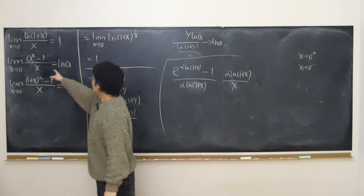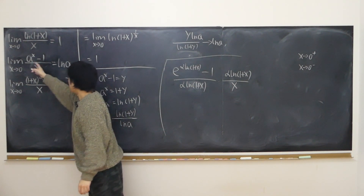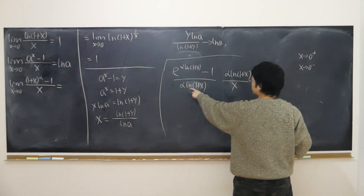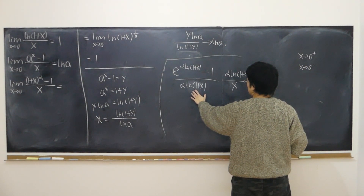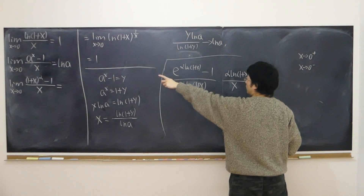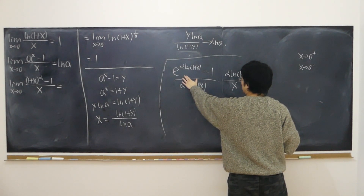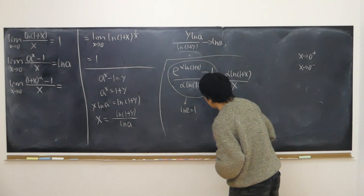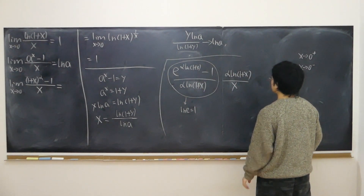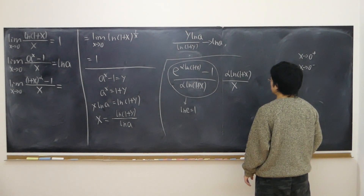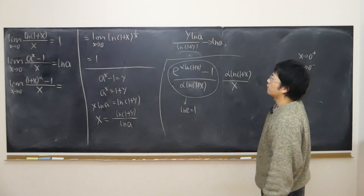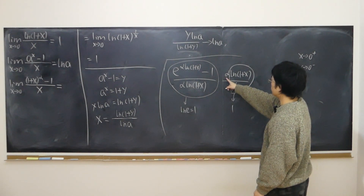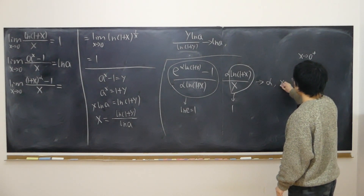According to our second lemma, this limit equals logarithm of whatever the base — base is e, so it gives log e, which equals 1. So that whole quantity approaches 1. The remaining part, logarithm of (1 + x) over x, is exactly our first lemma — we already know that approaches 1. So we're only left with alpha at the top, and the whole expression approaches alpha as x approaches 0.